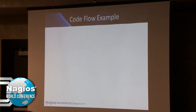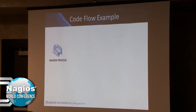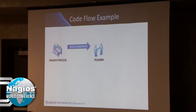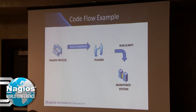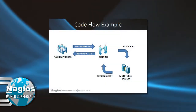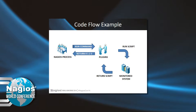Code flow example: you have the Nagios process, and Nagios process runs commands via commands.cfg. When Nagios commands call the plugin, the plugin runs a script on the monitored system, and the monitored system returns the result to the plugin. The plugin then returns 0, 1, 2, or 3. Of course there is more, but this explains the simple flow.